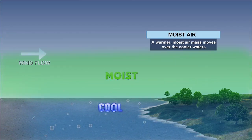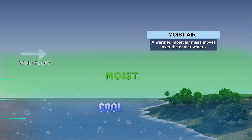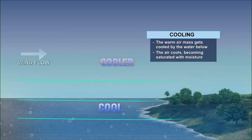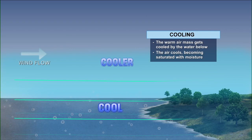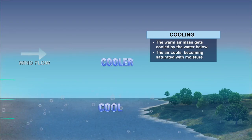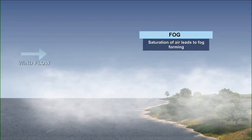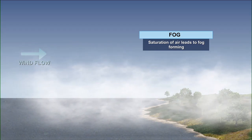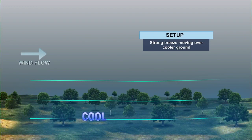With advection fog you have the moist air: a warmer moist air mass moves over the cooler waters — that sounds familiar to steam fog. Then you have the cooling: the warm air mass gets cooled by the water below, the air cools becoming saturated with moisture, and voilà, saturation of the air leads to fog forming.